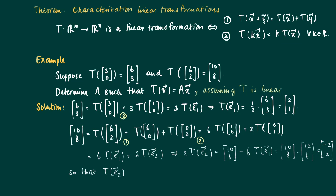So we may conclude that we can also calculate T of E2. T of E2 is half times [-2,2] which is equal to [-1,1].